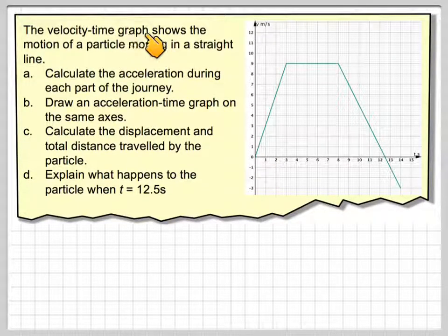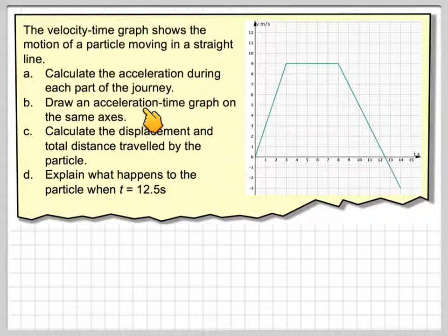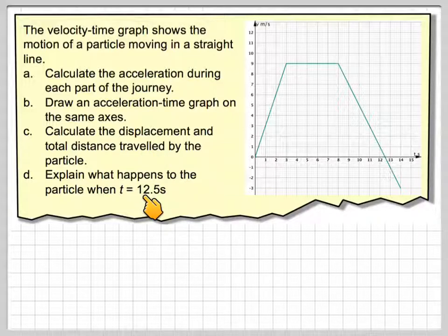The velocity-time graph shows the motion of a particle moving in a straight line. Calculate the acceleration during each part of the journey. Draw an acceleration-time graph on the same axis. Calculate the displacement and the total distance travelled by the particle, and explain what happens to the particle when t is equal to 12.5 seconds.